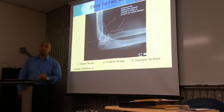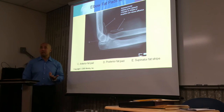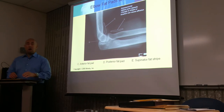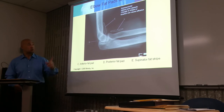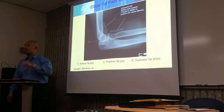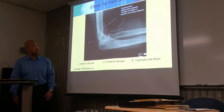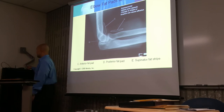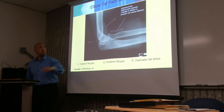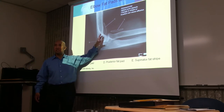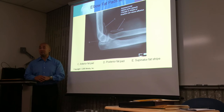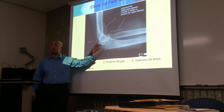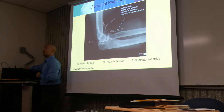Fat pads are also located around the elbow — they are extrasynovial pockets. Even if you don't see a fracture, doctors will look for any movement or displacement of those fat pads. You don't need to know their exact names or locations, just know that fat pads exist and we look for them in any trauma involving joint capsules.